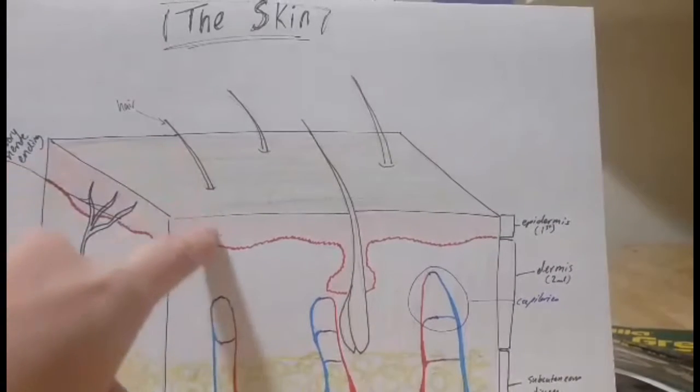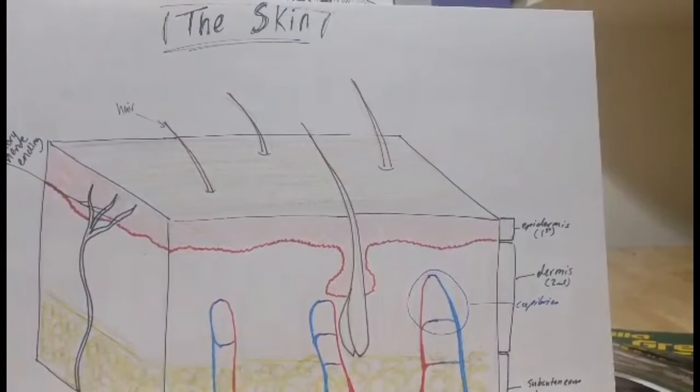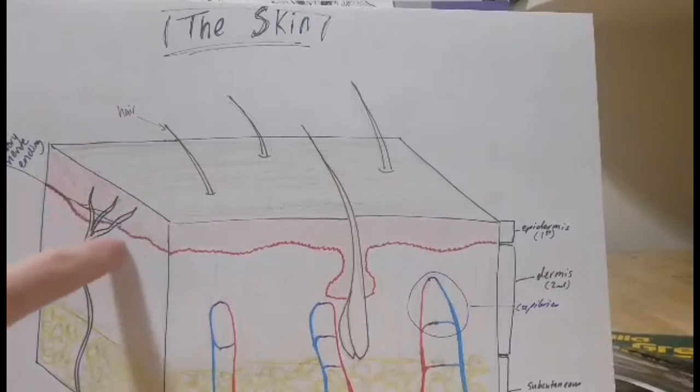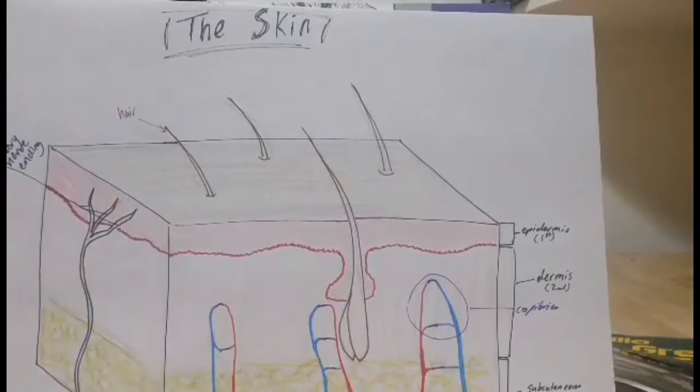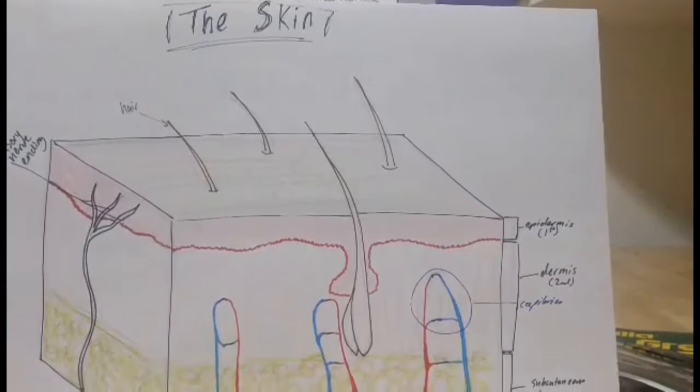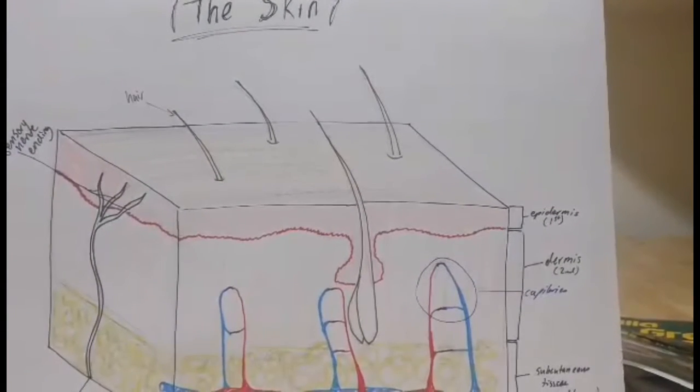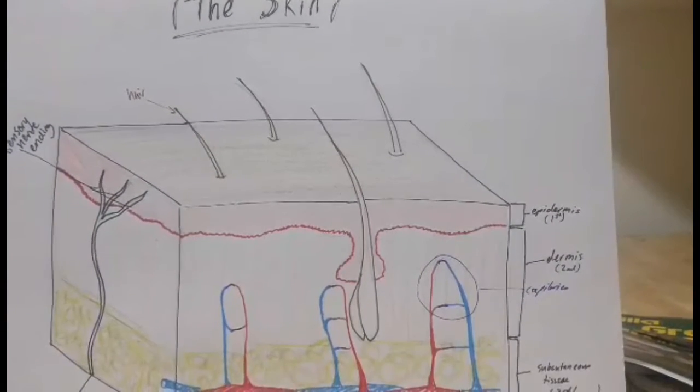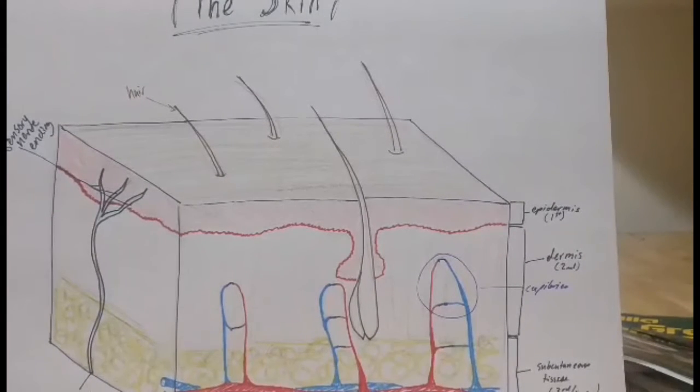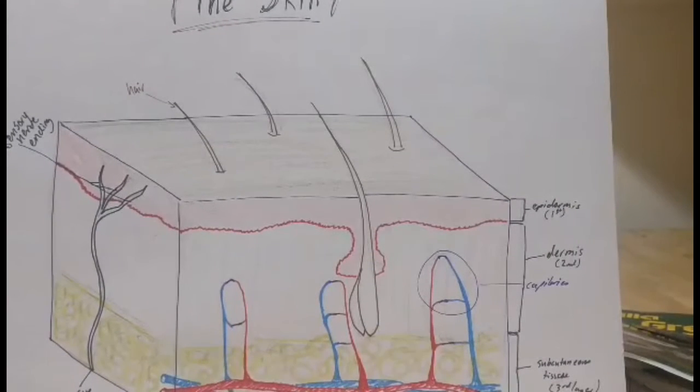Once it extends down into that second layer of skin, the second degree burn, these are very painful because you have your sensory nerve endings in the first two top layers of skin. So once you extend down into that layer, it's going to be very painful. Your skin might blister, you'll have redness to the site, be very sore. Your skin might look pink, red, or have white patches depending on what type of burn you have, and there may be a little bit of bleeding as well.